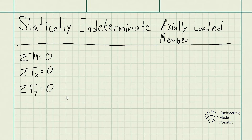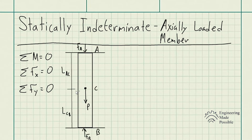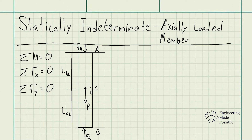For example, let's say you have a rod constrained between two walls. You have point A, point B, and an external load P being exerted at point C. If you were to do the sum of forces along the y direction, you would have two unknowns — the reactionary forces FB and FA — but only one equation. So you have two unknowns and one equation.